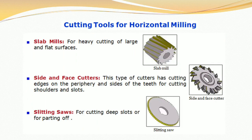Now we talk about the cutting tools for horizontal milling: slab mills, side and face cutters, and slitting saws. Slab mills are used for heavy cutting of large and flat surfaces. Side and face cutters have cutting edges on the periphery and sides of the teeth, used for cutting shoulders and slots. Slitting saws are used for cutting deep slots or for parting off. There are pictures of slab mill, side and face cutter, and slitting saw.